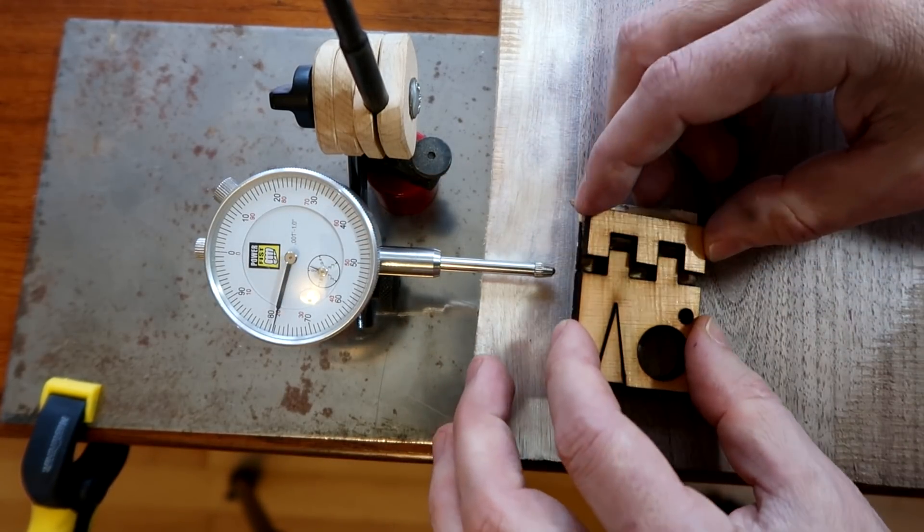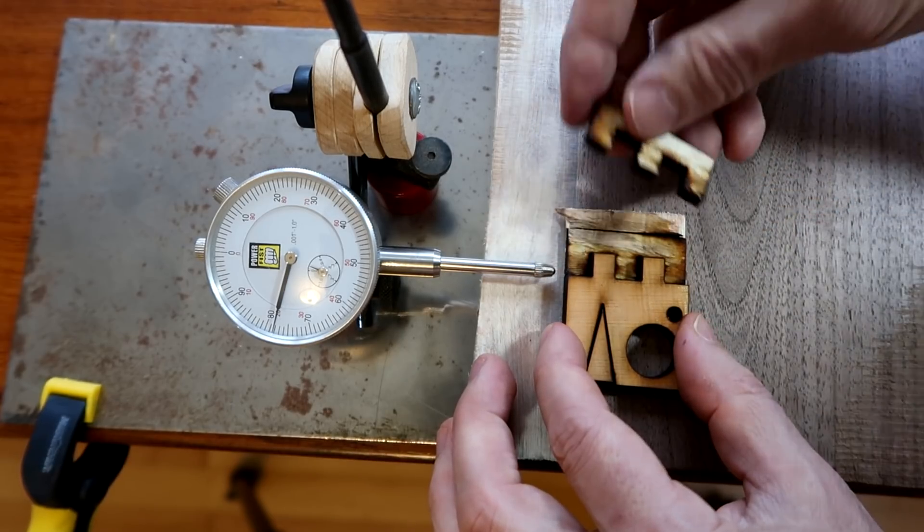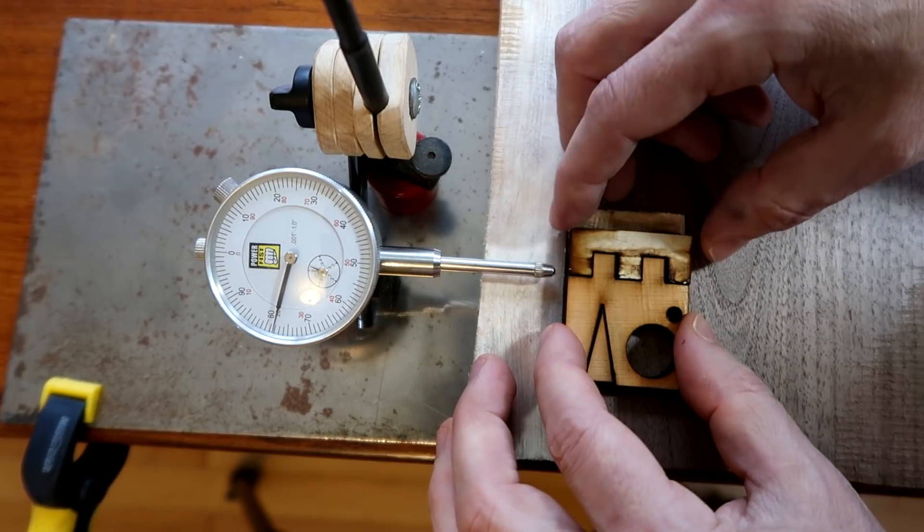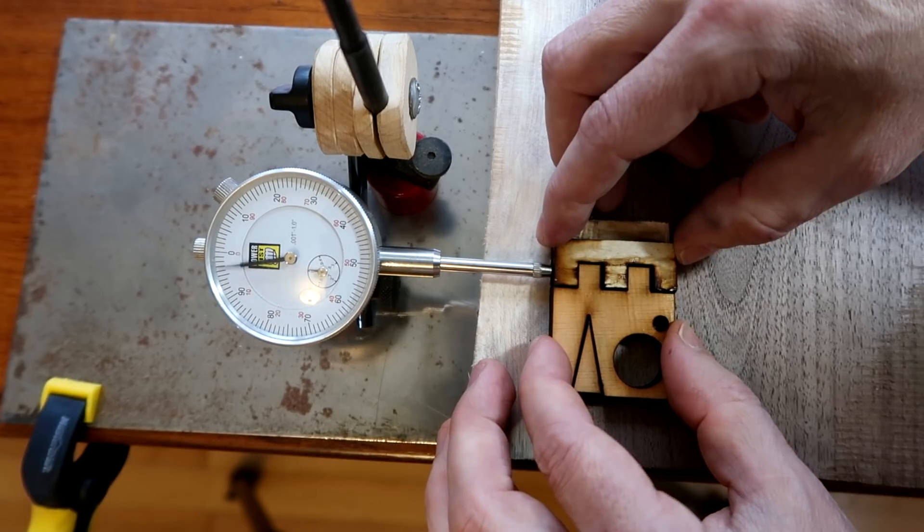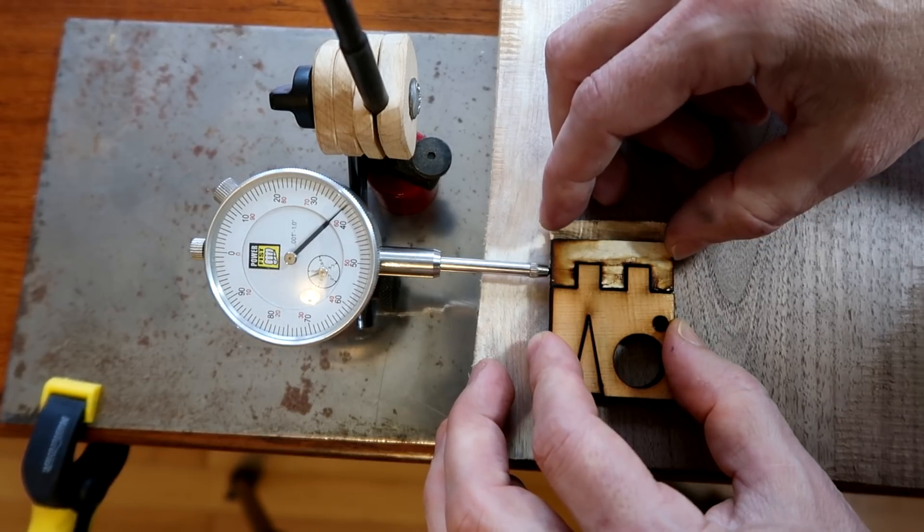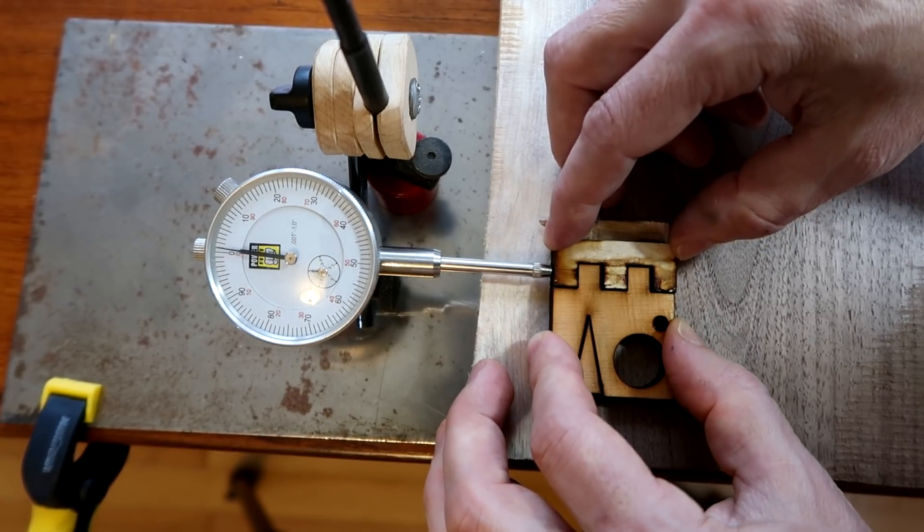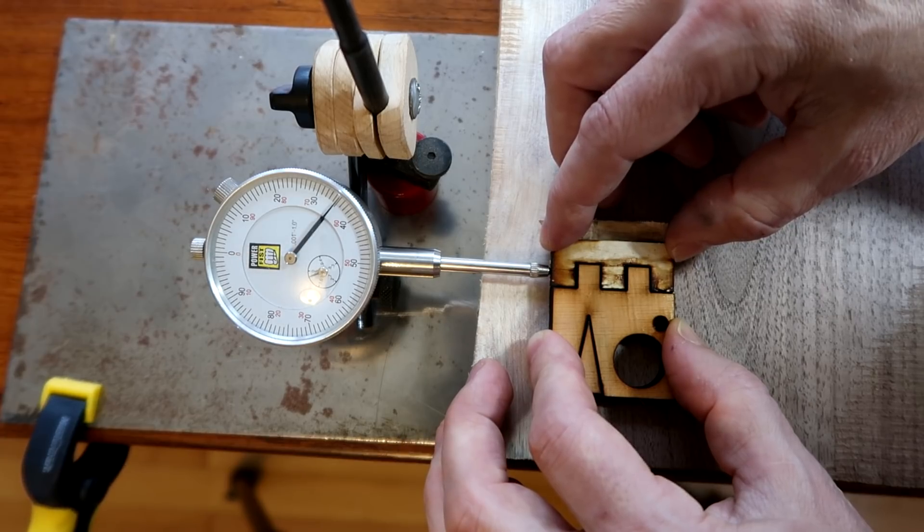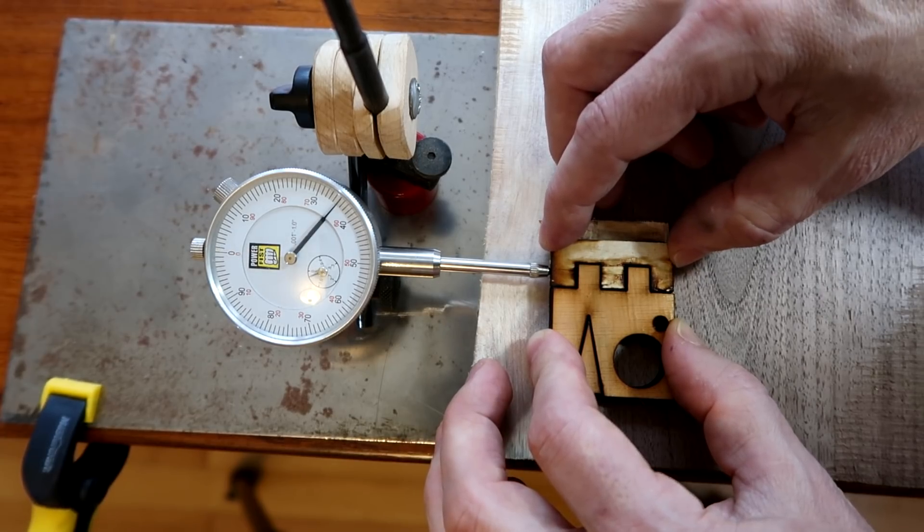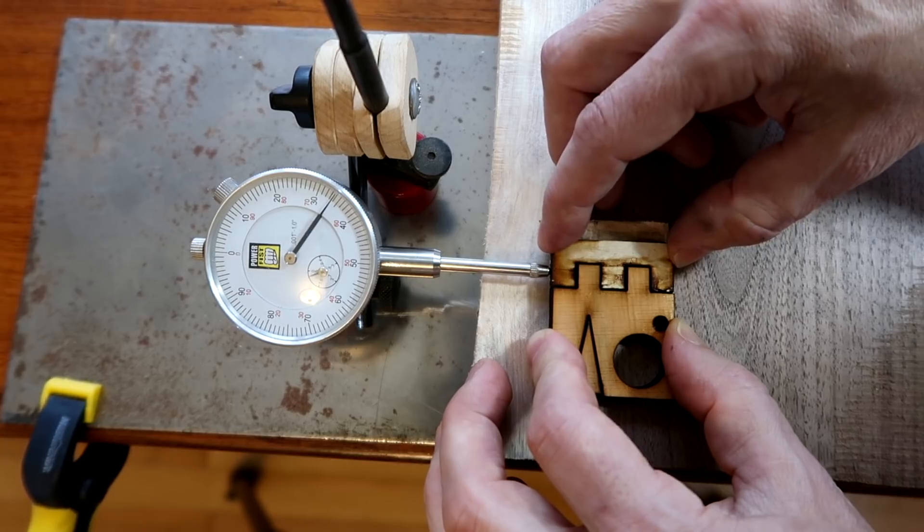So I've got half a millimeter worth of kerf here, but if I flip this piece over and try that same test again, now I have about 35 thou worth of movement. That's about 0.9 millimeters.